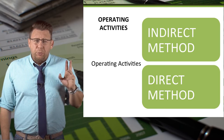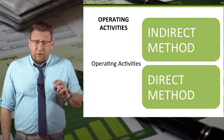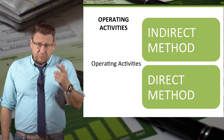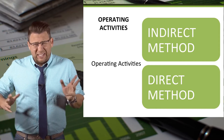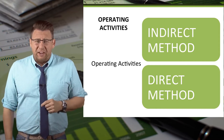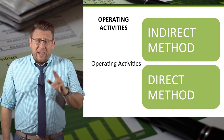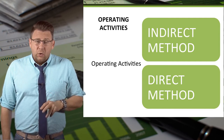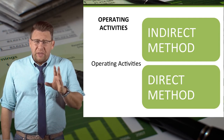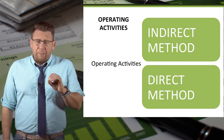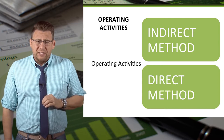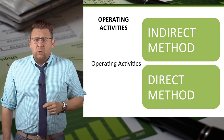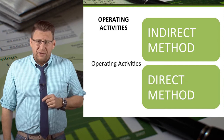There are two ways to prepare the operating activities section. The indirect method, which is preferred by industry and used by at least 95% of businesses, and the direct method, which is preferred by FASB. Regardless of which method is used, the result of the operating activities are exactly the same. This video will demonstrate the indirect method.